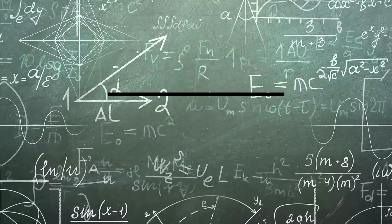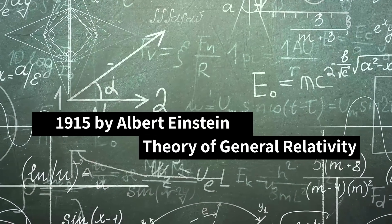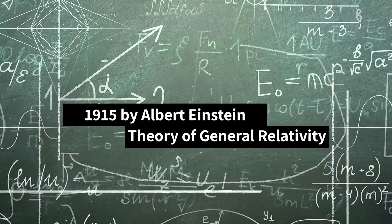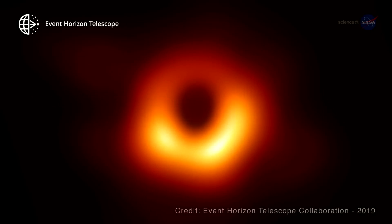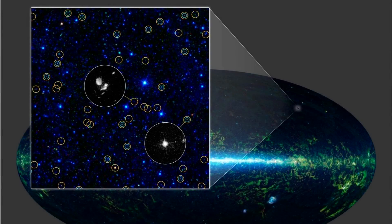Black holes were first proposed in 1915 by Albert Einstein in his theory of general relativity, but they were just theoretical until the first one was discovered in 1971. Fast forward to 2023, scientists have now detected hundreds of black holes, and each one gives us more clues about our universe.